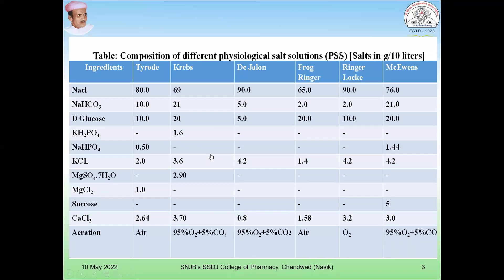This table gives the composition of different physiological salt solutions — the salts in grams per 10 liters of solution. These are the different types of solutions as discussed, and these are the ingredients included. For each type of solution, the concentration of each ingredient varies. Not all ingredients are included in every solution; it depends on the solution — some ingredients are included, some are not.